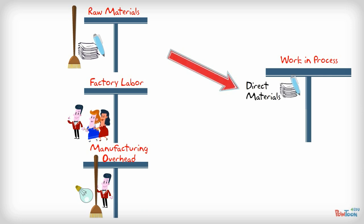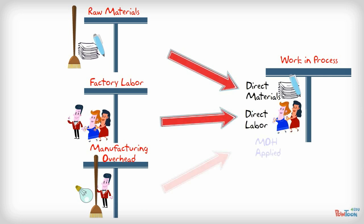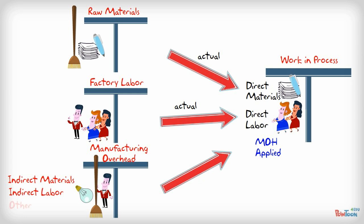This inventory account needs direct materials, direct labor, and manufacturing overhead. The direct materials and direct labor are posted as actual amounts. To be more precise, we post the actual cost of the paper, glue, and wages we pay to the workers. The indirect materials, labor, and other items are also posted as actual amounts.